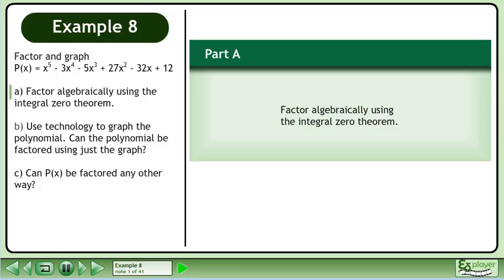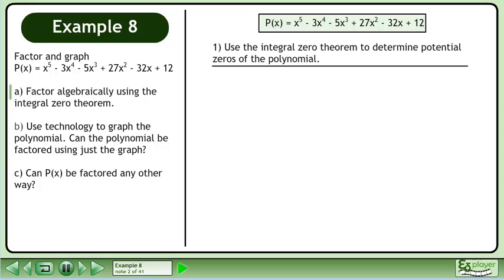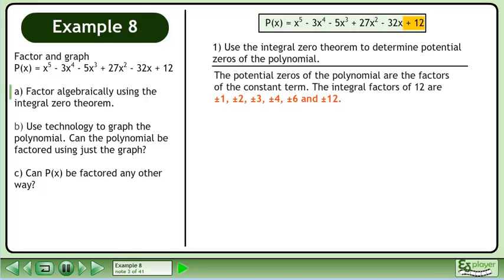In part A, factor algebraically using the integral zero theorem. Use the integral zero theorem to determine potential zeros of the polynomial. The potential zeros are the factors of the constant term. The integral factors of 12 are ±1, ±2, ±3, ±4, ±6, and ±12.